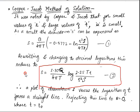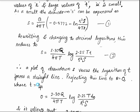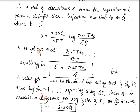A plot of drawdown s versus the logarithm of t forms a straight line. When you project that line to s = 0, where t = t₀, then the expression becomes: 0 = (2.30Q / 4πT) × log(2.25T·t₀ / r²S).